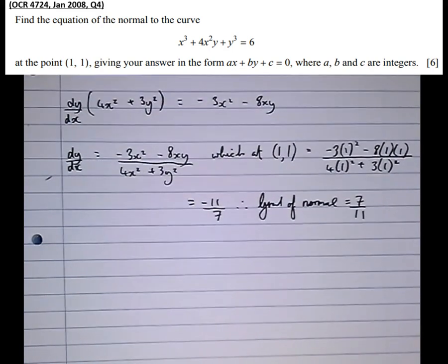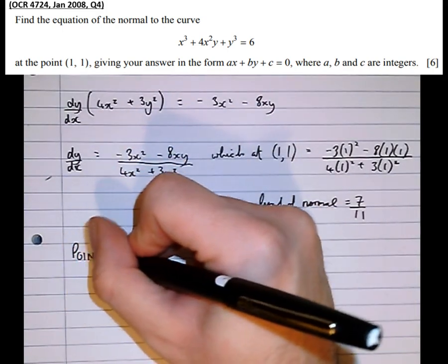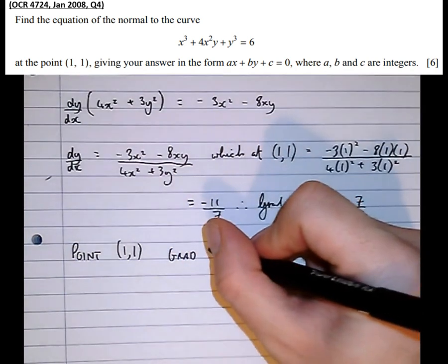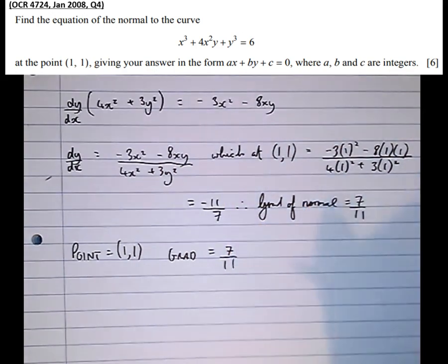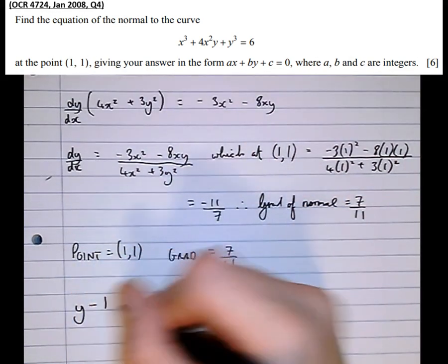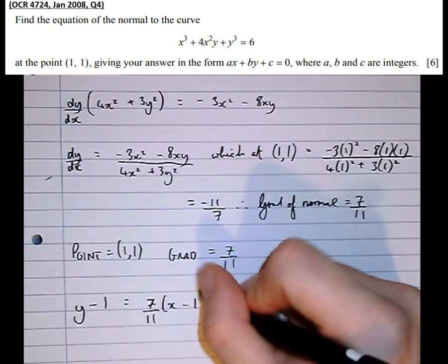So going further than that, we now know a point on the line. Our point is (1, 1). Our gradient is 7/11. Therefore, subbing the general equation of a straight line, y - y₁ equals m(x - x₁).